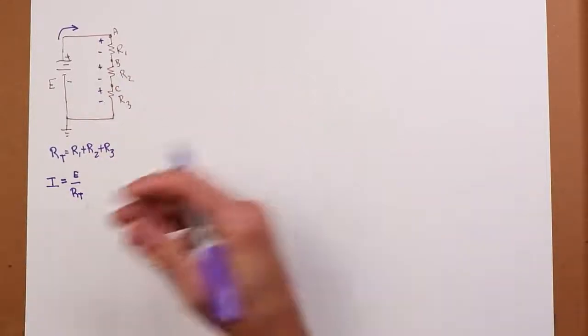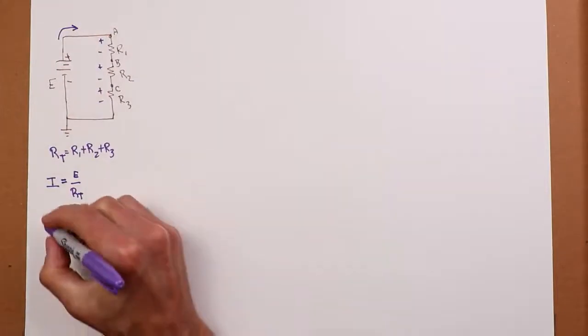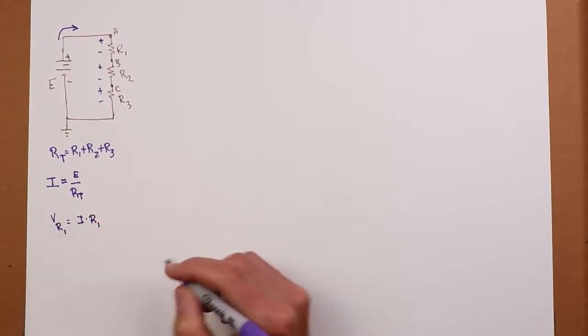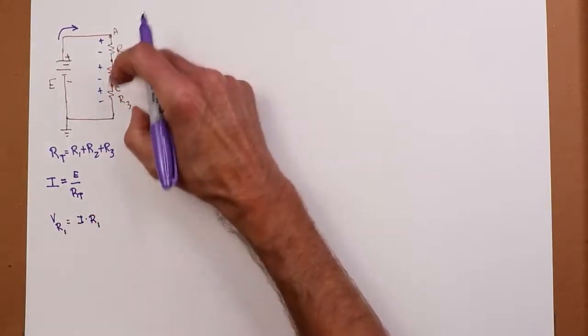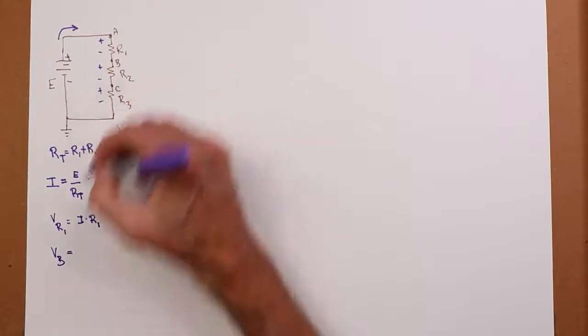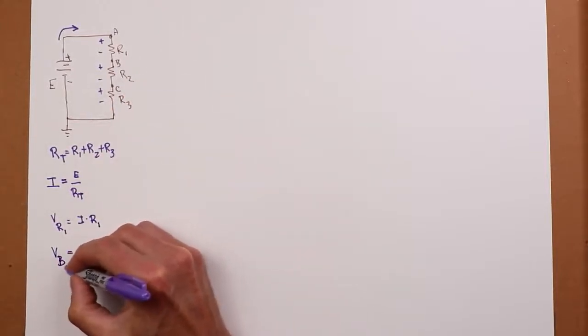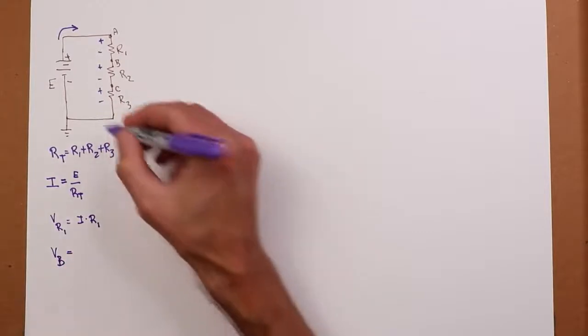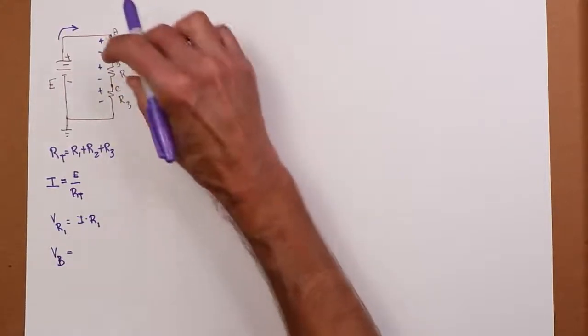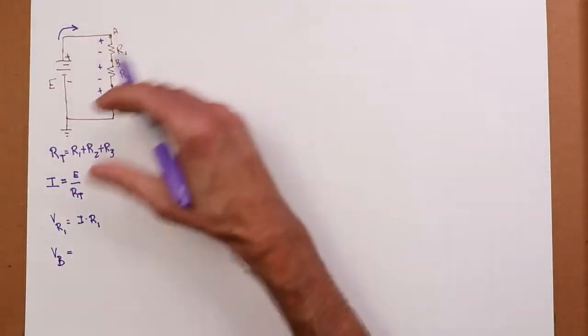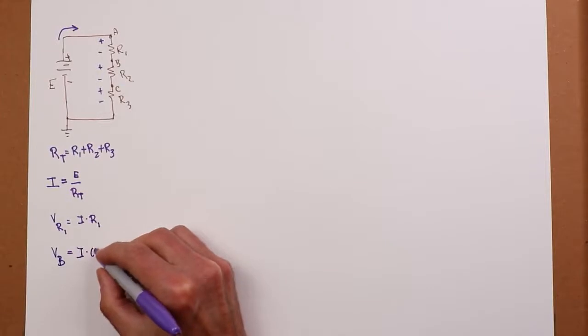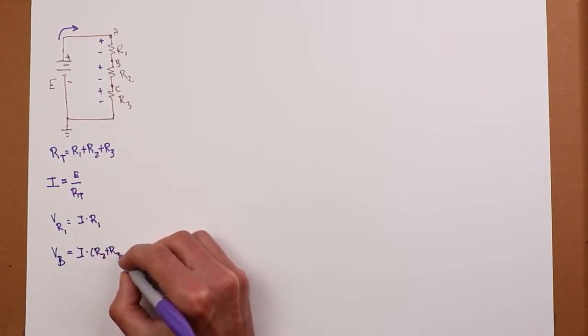We use that current to find a particular voltage. So if I'm interested in finding the voltage across R1, it's I times R1. If I want to get something like voltage B, that's B to ground. Remember, single subscript means the second assumed subscript is ground. We would take the current, pass it through R2 and R3, and sum up those two potentials. As a formula, it's I times R2 plus R3.